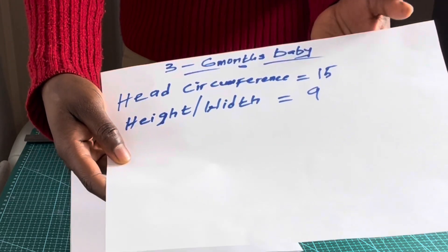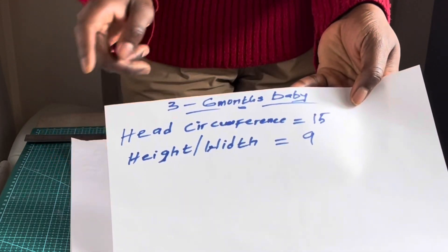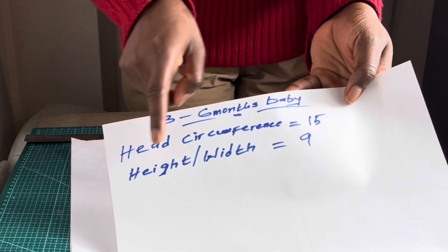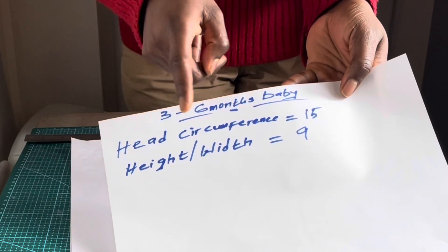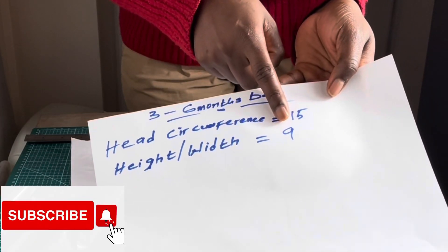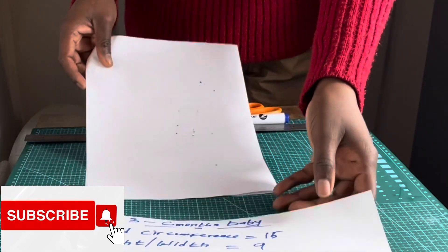This pattern is for three to six months old baby, and the head circumference I'll be working with today is 15 inches and the height, or you can refer to it as the width, will be 9 inches. Now I've folded my paper into two equal halves.